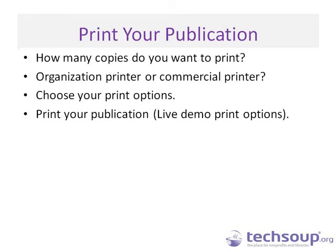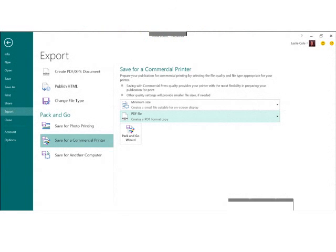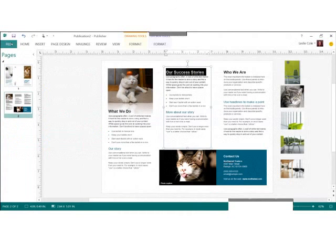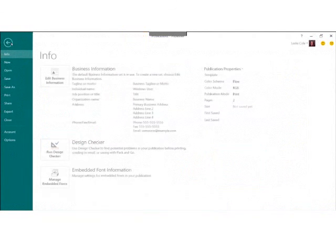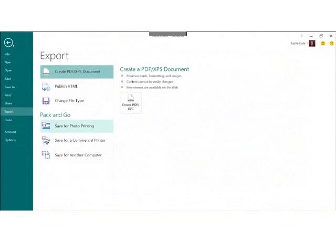We still have a second half to go through, but I'd like to jump in with a few questions. A couple of people asked: can you explain the Pack and Go Wizard a little more? Sure — it can be found on the File menu under Export. Basically, what the Pack and Go Wizard does is prepare your file for printing or distribution.